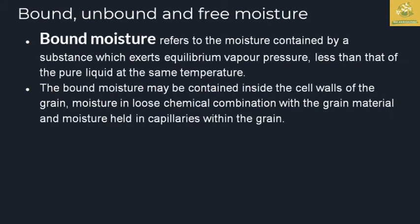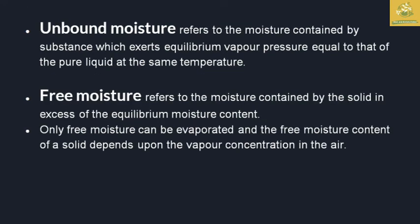Finally, we look at bound, unbound, and free moisture present in produce. Bound moisture refers to moisture in a substance that exerts an equilibrium vapor pressure less than that of pure liquid at the same temperature. Bound moisture is contained inside the cells of the produce, such as inside the cells of grains. Moisture in loose chemical combination with the grain material and moisture held in capillaries within the grain are also considered bound moisture.